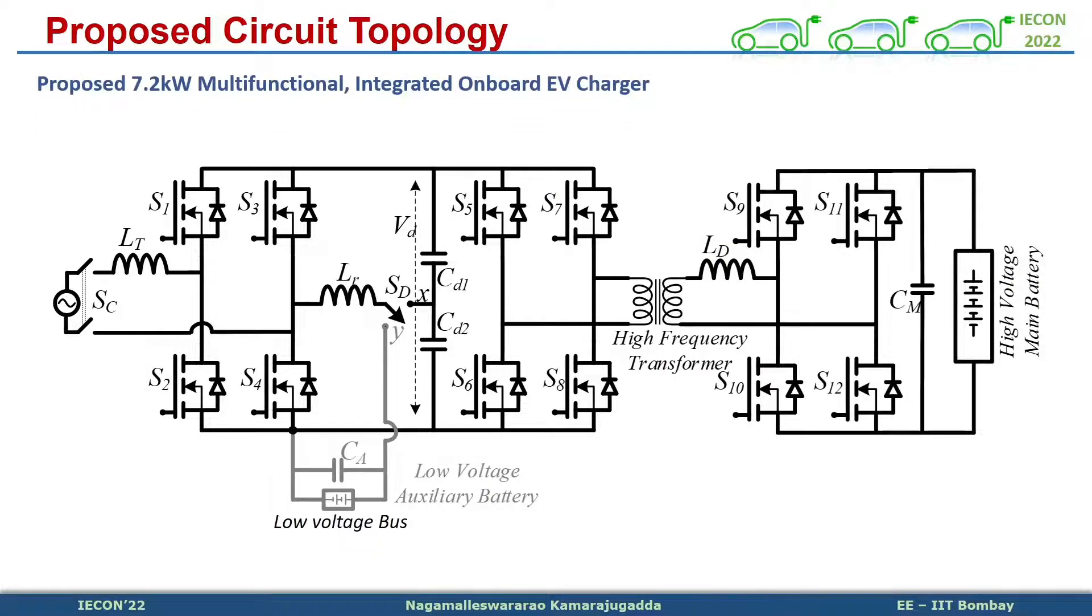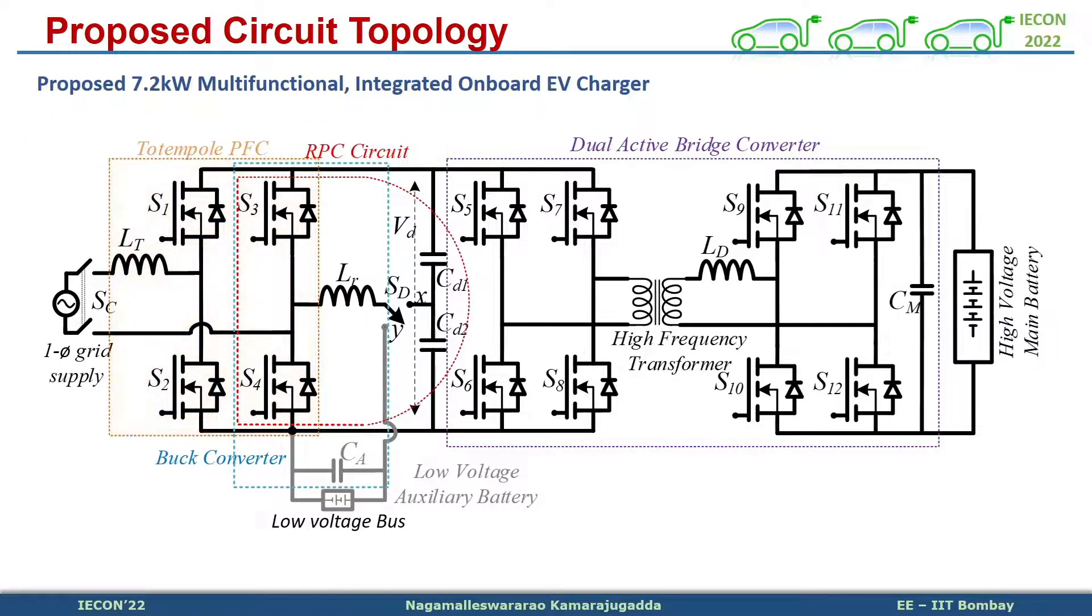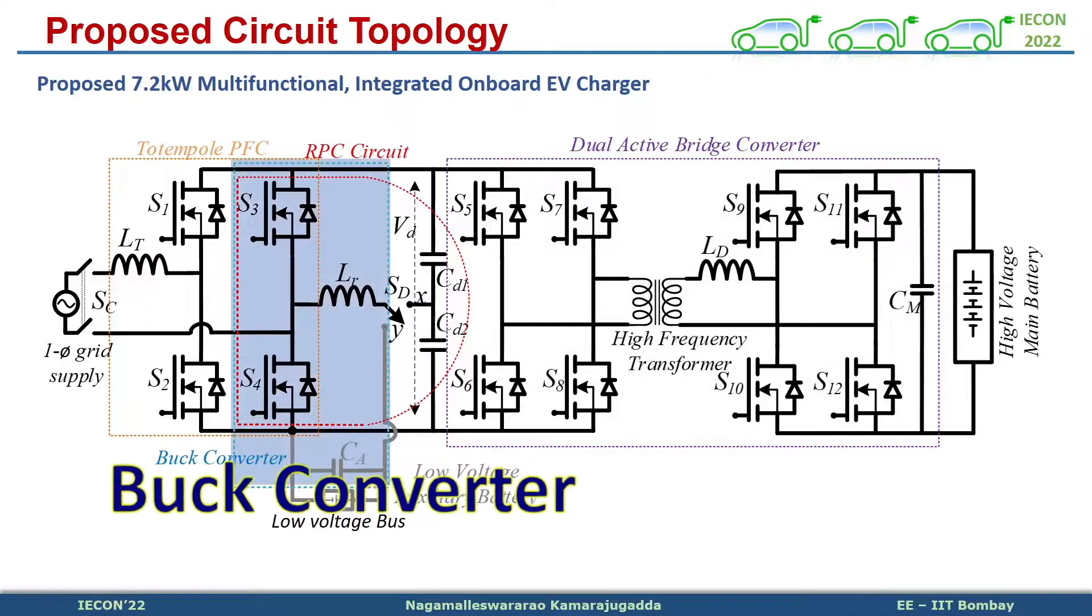This is the proposed circuit topology. It contains a totem pole PFC which maintains grid requirements, an integrated ripple power compensation circuit, a dual-active bridge converter to meet battery requirements, and a buck converter.